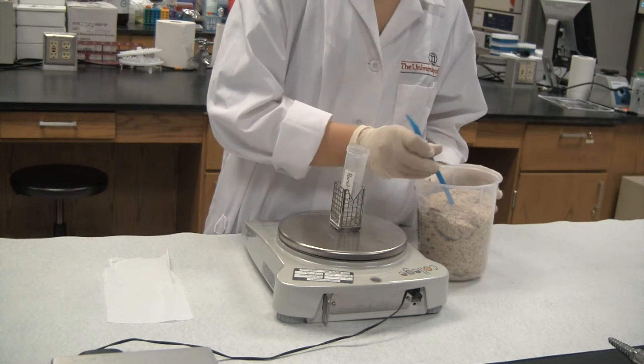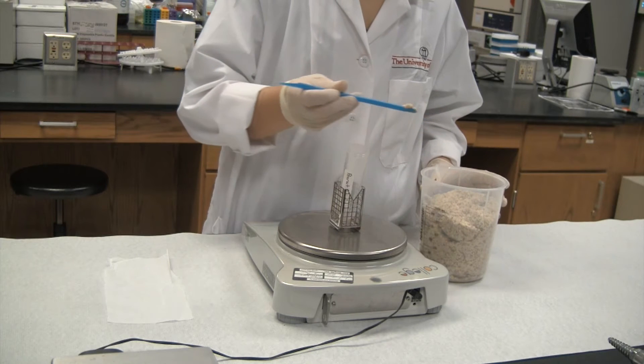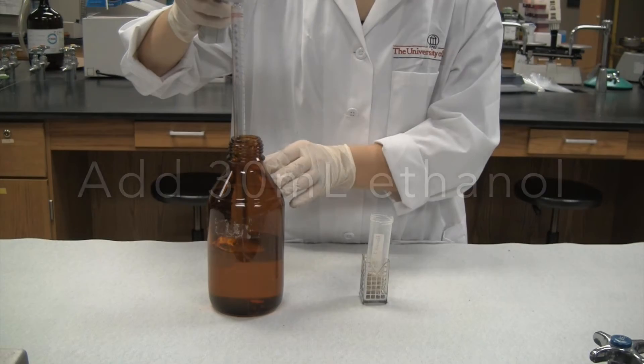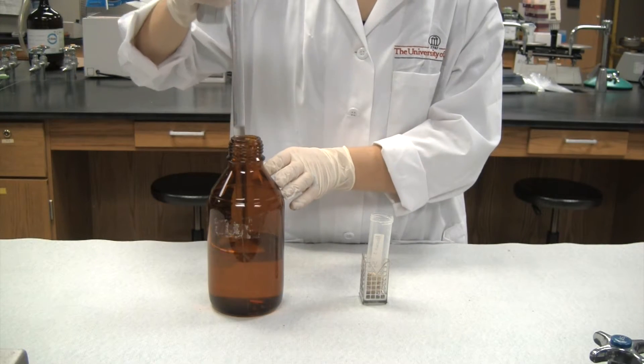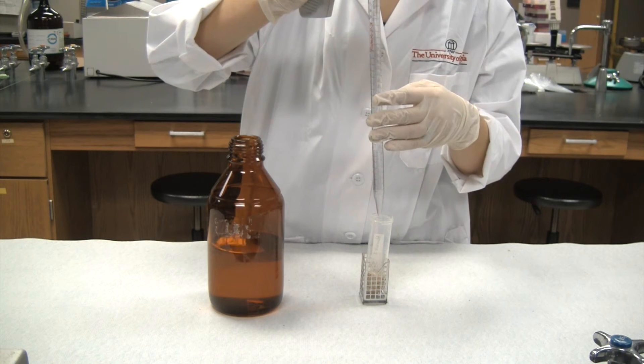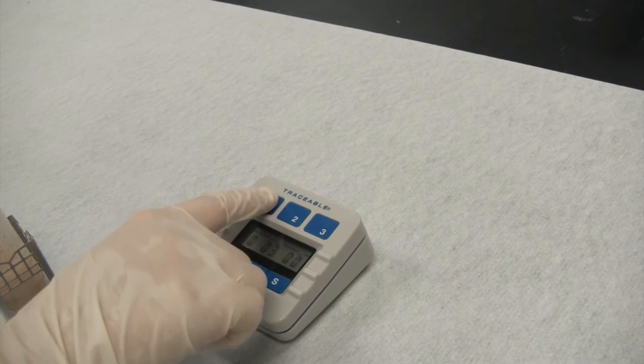From the ground material, weigh a 10 gram subsample. Next, measure 30 milliliters of a 65% ethanol solution and add this to the test portion in a jar with a sealable lid. Vigorously shake the jar with the mixture for 3 minutes.